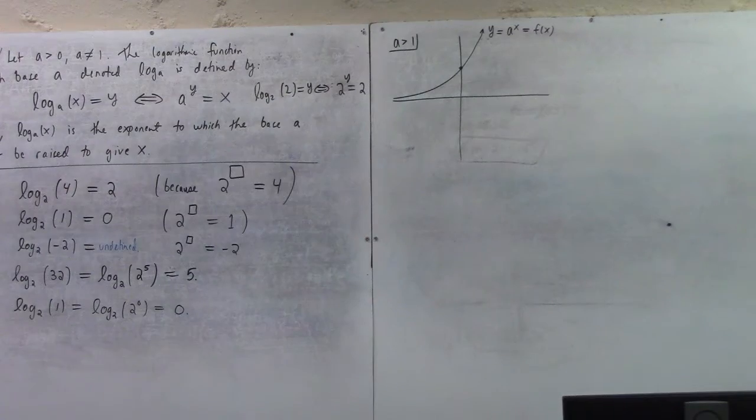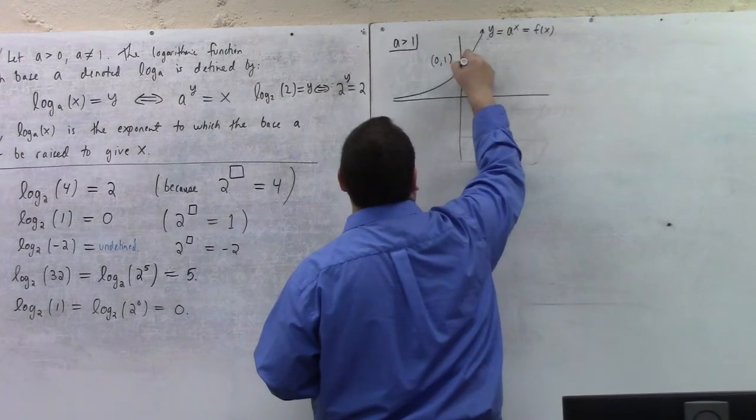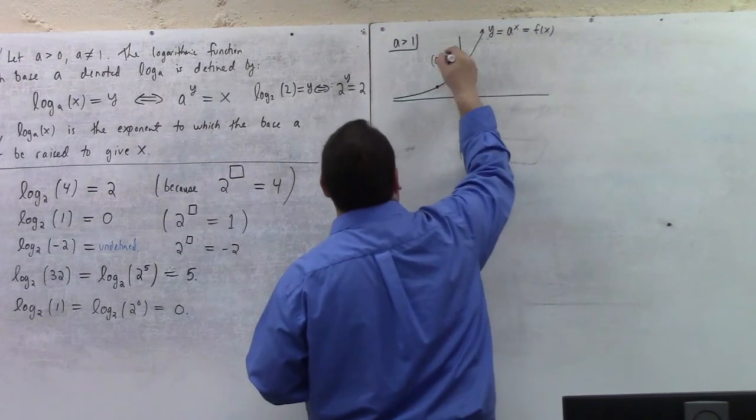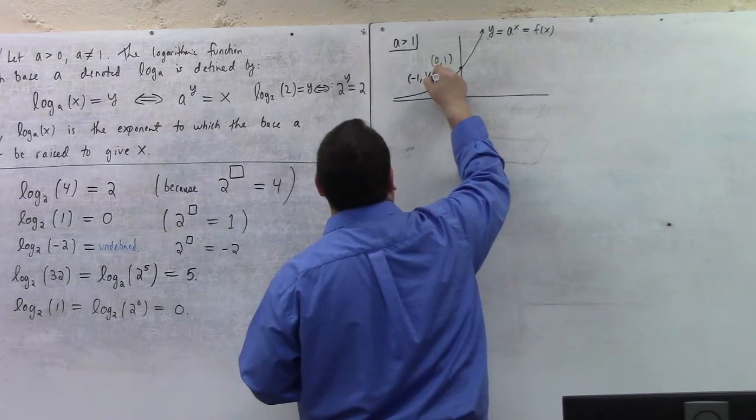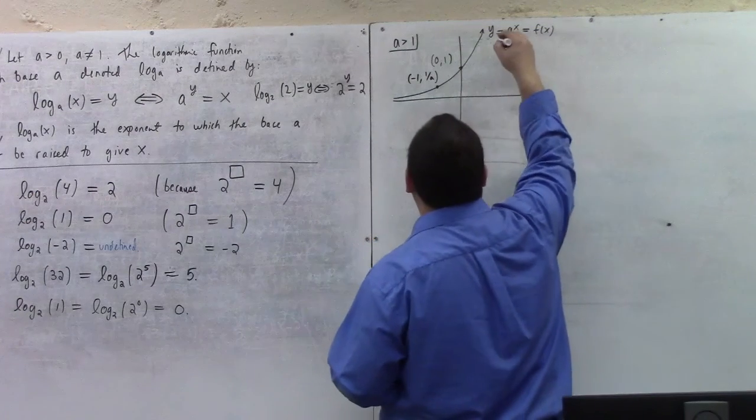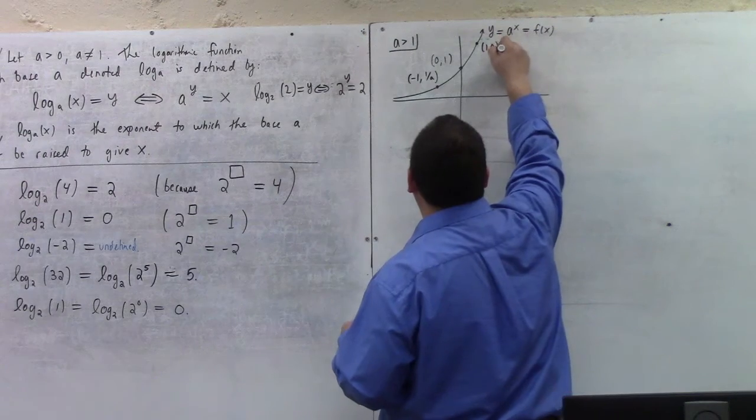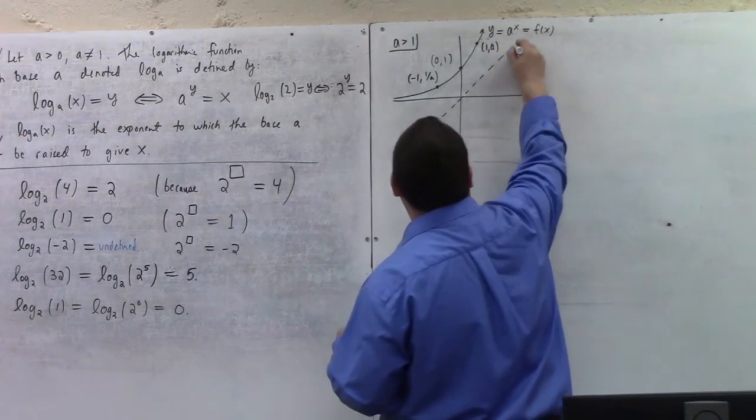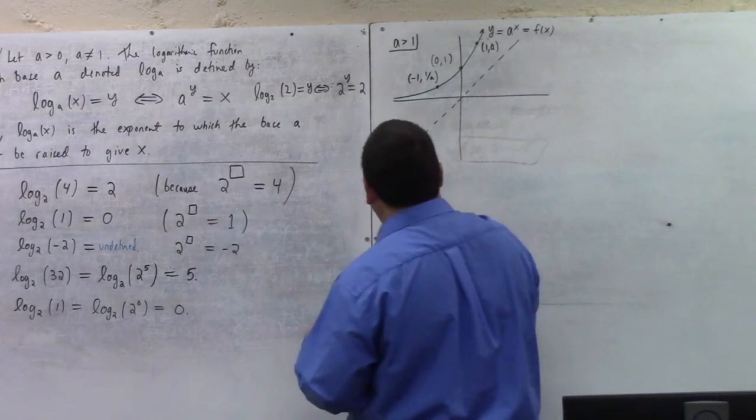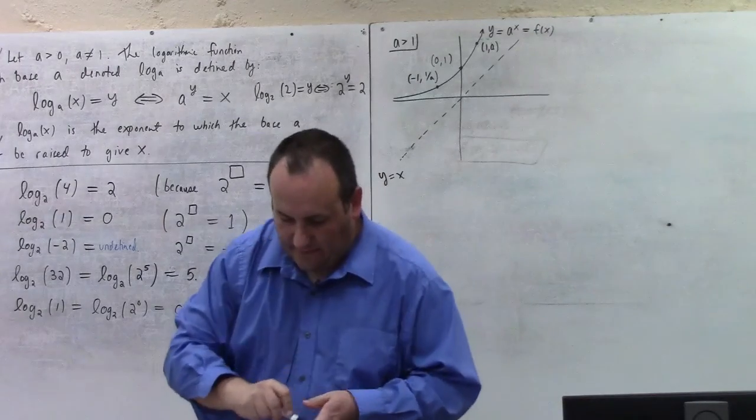Shouldn't we just take a couple of representative points and flip them? So we know the y-intercept is 0, 1. We also know that we've got this point over here of minus 1, 1 over A. And there's a point over here, which would be 1, A. And so if I draw in this line, y equals x, we know that the graph of the inverse function should be the reflection of the graph of the function over the line y equals x.